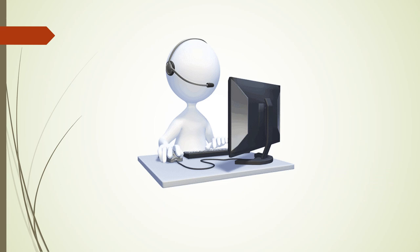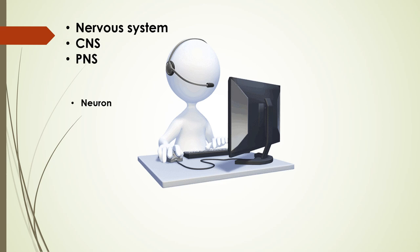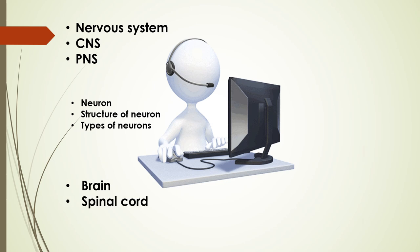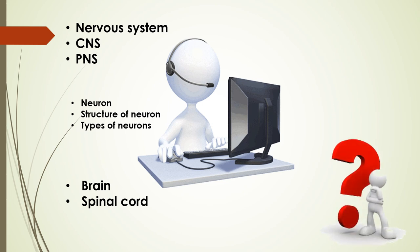In this video you studied about the nervous system, central nervous system, peripheral nervous system, the basic structure of the nervous system — the neuron — its structure and types, and then the central nervous system comprising brain and spinal cord. If you still have questions, feel free to ask in the comment section. Till the next video, good luck and Allah Hafiz. Thank you.